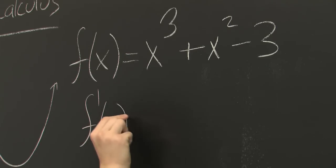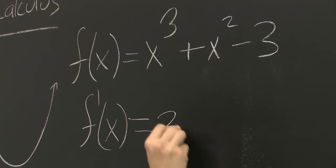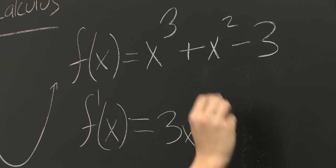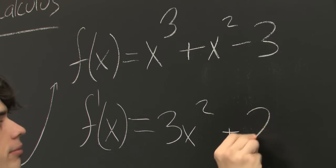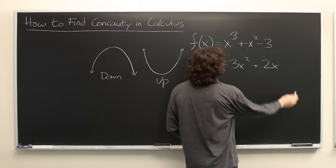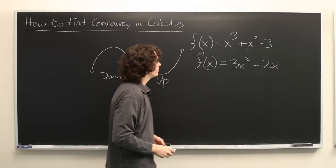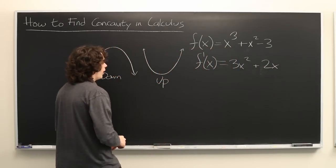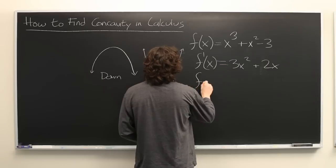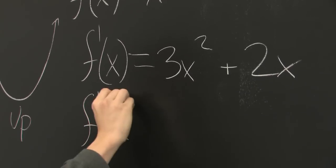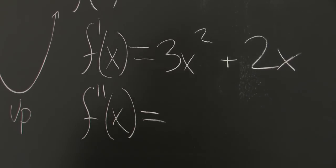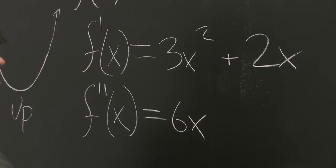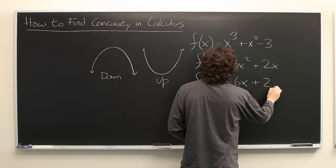So find f prime of x. We get 3x squared plus 2x. The derivative of minus 3 is just 0. But as we said before, we want the second derivative of x. So we get 6x plus 2.